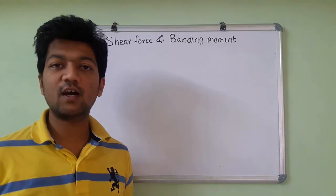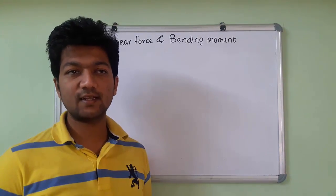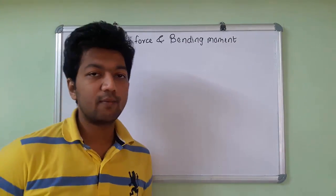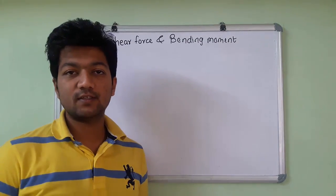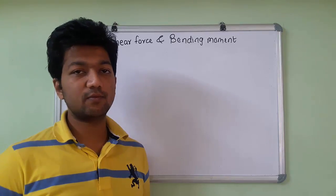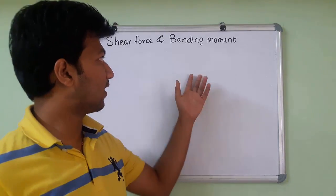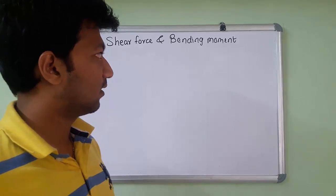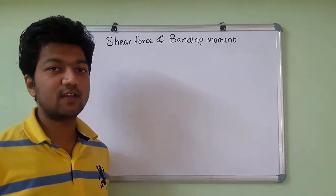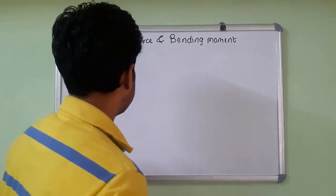A shear force is the algebraic sum of the unbalanced forces in the beam. And what is meant by bending moment? A bending moment is the moment that occurs in the beam due to the unbalanced force. Before starting, we understand what is the sign convention to find these things.